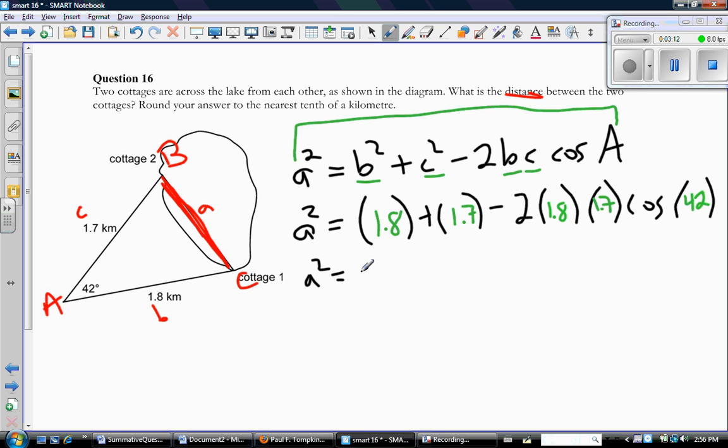So, 1.8 squared, 1.7 squared. Oops, sorry, I got that backwards. Try that again. 1.8 squared is 3.24. 1.7 squared is 2.89.